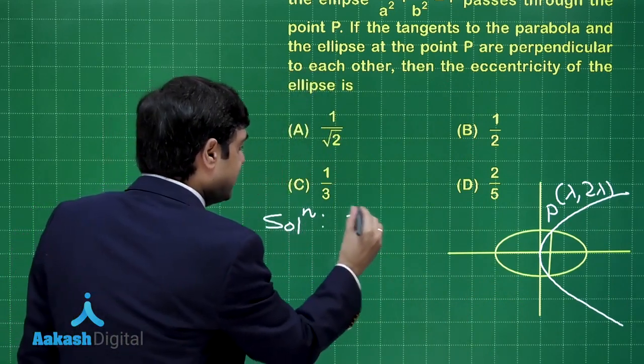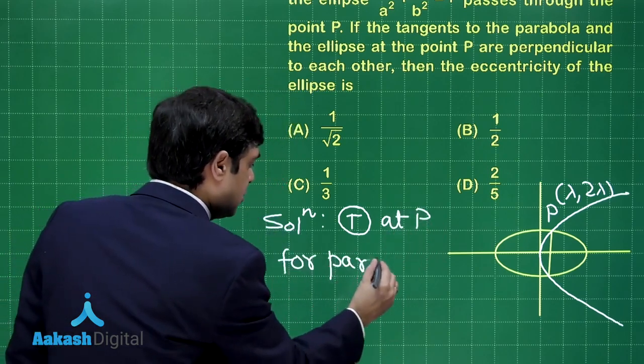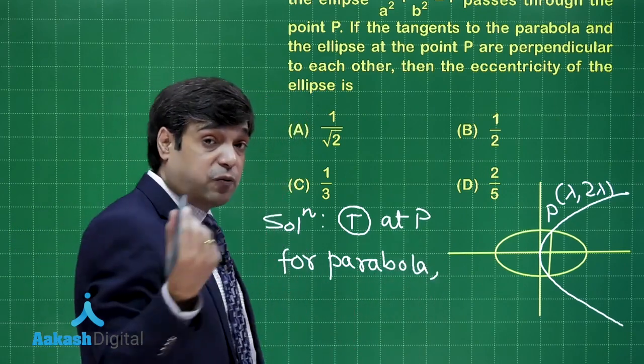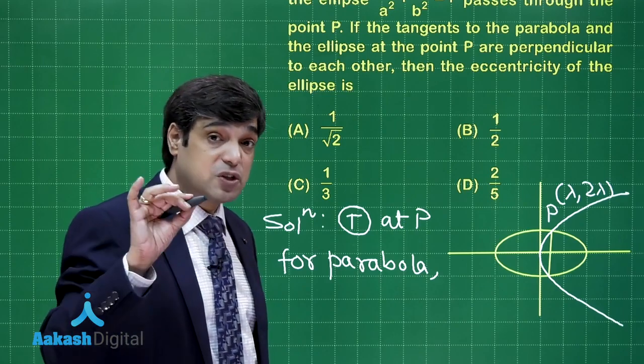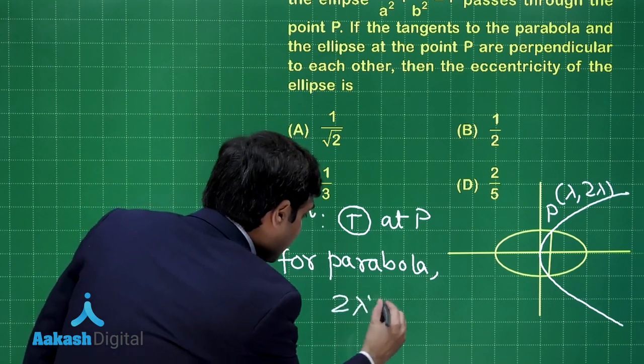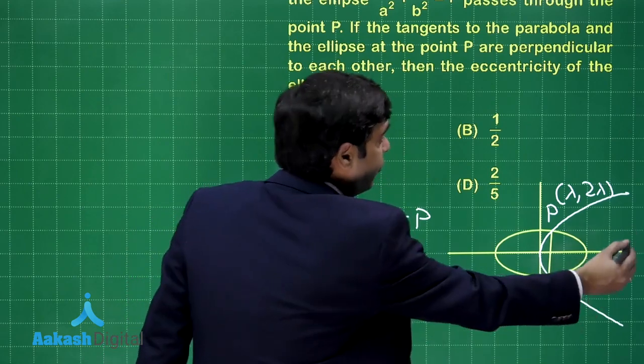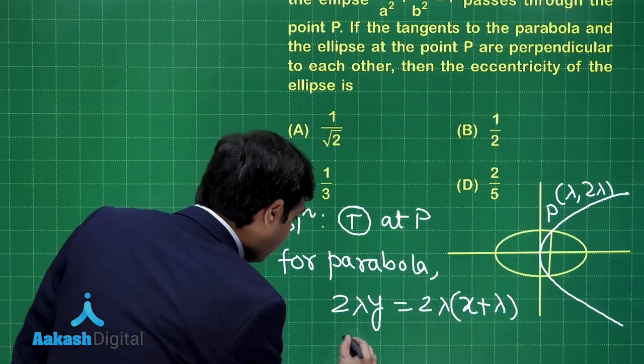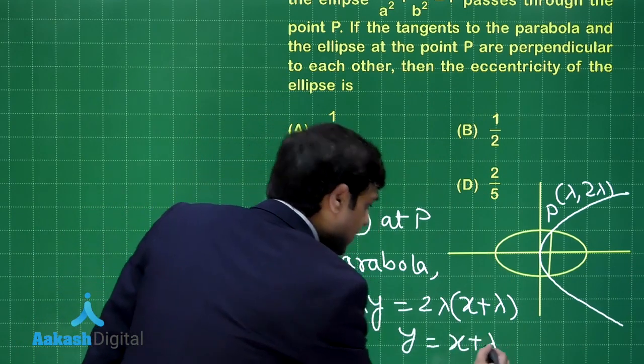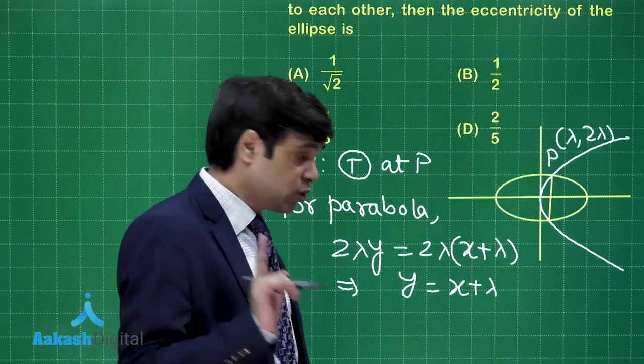Now we can write tangent at P for parabola. It is y square equals 4 lambda x is the parabola. So y y1 equals 2 lambda into x plus x1 will be the tangent. So 2 lambda y is equal to 2 lambda into x plus lambda. Now when you look at this tangent, what you can conclude from here? You can clearly see 2 lambda is cancelled. Y is x plus lambda. What is the slope of this tangent? 1. Slope of this tangent is 1.